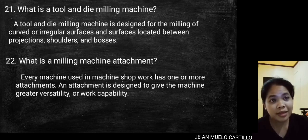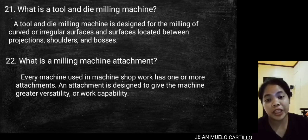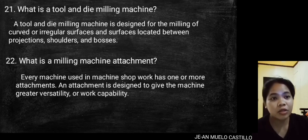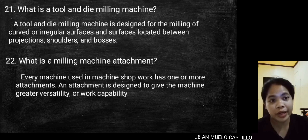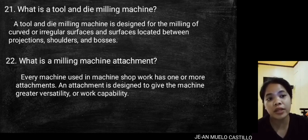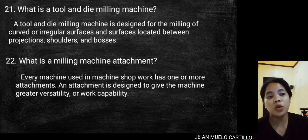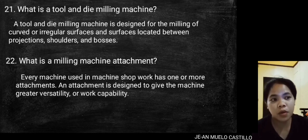What is a tool and die milling machine? A tool and die milling machine is designed for the milling of curved or irregular surfaces and surfaces located between projections, shoulders, and bosses.